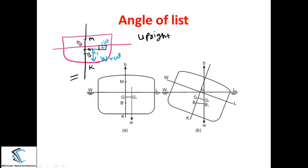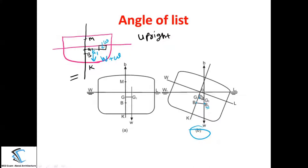When the center of gravity of the whole ship shifts toward the starboard side to G1, the ship inclines toward the starboard side, as shown in figure B. When the ship inclines, the center of buoyancy also shifts from B to B1. The new center of gravity is G1, and through this point passes one line. You can see the change of center of gravity from G to G1 is perpendicular to the center line of the ship. This gives a triangle G, G1, M, where M is the intersection point.